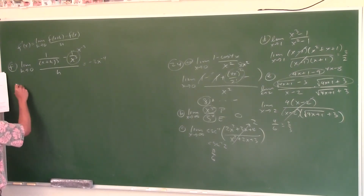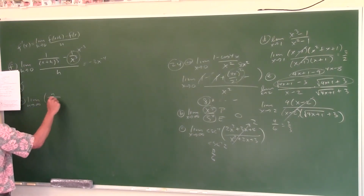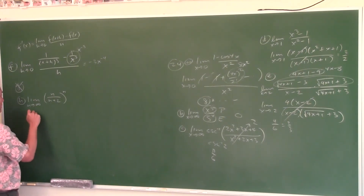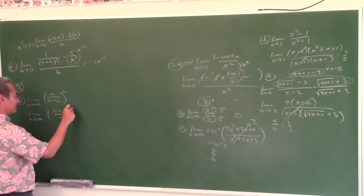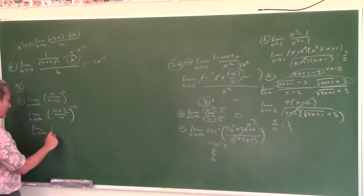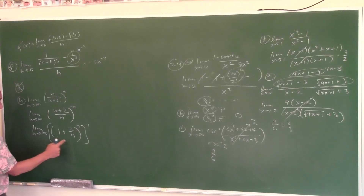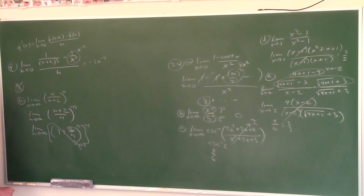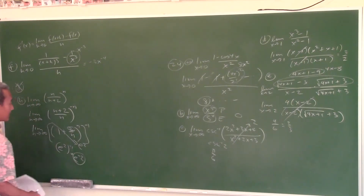Limit as n approaches infinity of (n/(n+2))^n. Rewrite as (1 + 2/n)^(−n) by manipulating the fraction. Split into separate terms: (1 + 2/n)^n approaches e² as n→∞, raised to the −1 power. So the final answer is e^(−2).